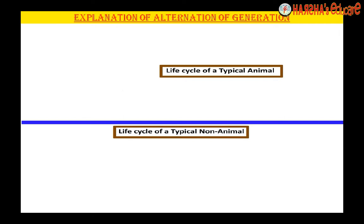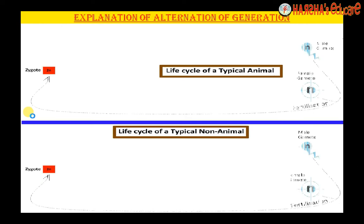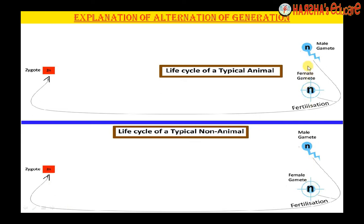Let us begin with the similarities between both life cycles. The first similarity is that if we consider two sexually reproducing organisms, both of their life cycles start with a zygote, and the zygote is always diploid in both cases — never, never haploid. The zygote always develops into an embryo, and the zygote is always the result of fertilization between two gametes: one male gamete and one female gamete. This is a universal truth; the zygote is not formed by any other event.